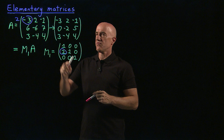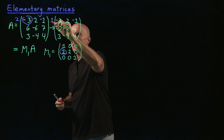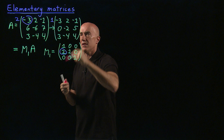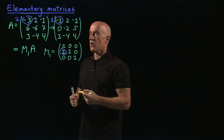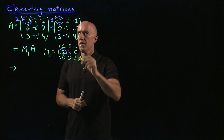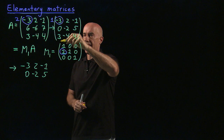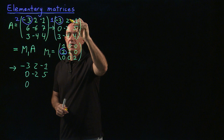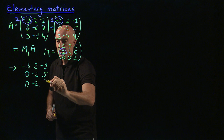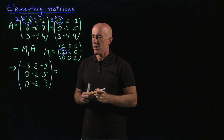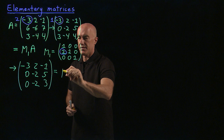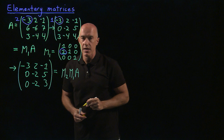The next step: we multiply the first row by one and add it to the last row to eliminate the three. We're still on the same pivot, minus three. So now the matrix becomes: minus three, two, minus one; zero, minus two, five; and then zero, minus two, three — we just added the first row to the last row. This matrix is obtained by multiplication by another elementary matrix M2 times the previous matrix, which is M1 times A.